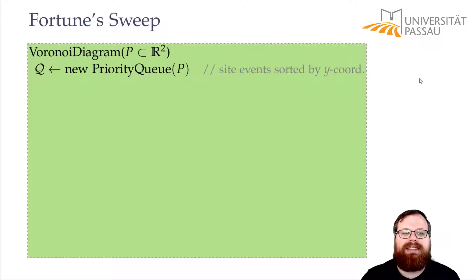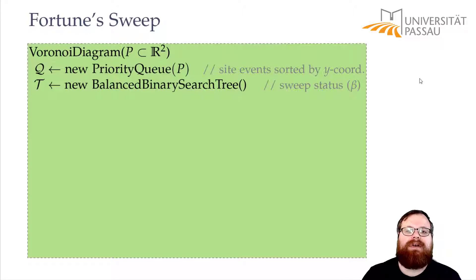Later we will also put the circle events in there. Then we have a data structure for the sweep status for the beachline, that's again a balanced binary search tree that contains all these parabolas that define the beachline, all these at most 2n-1 parabolas. And then we have a doubly connected edge list, that's our graph data structure where we want to save the Voronoi diagram.